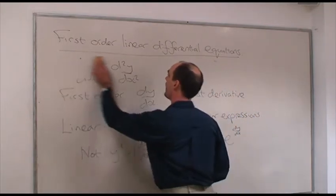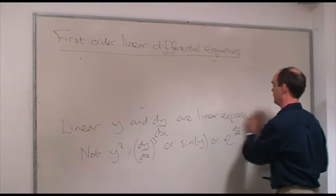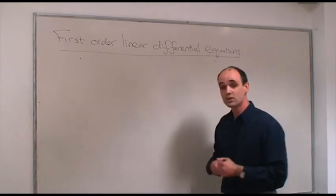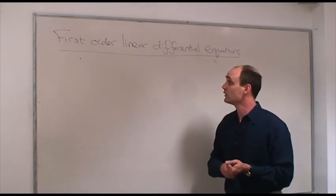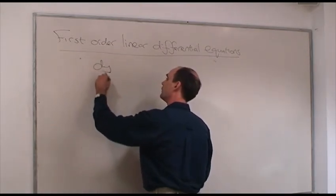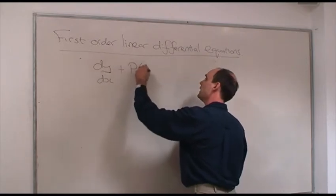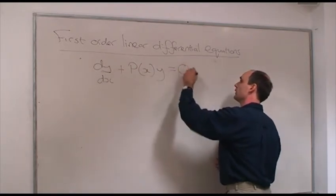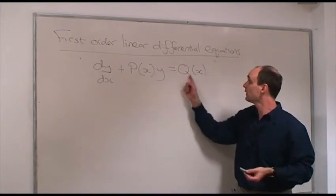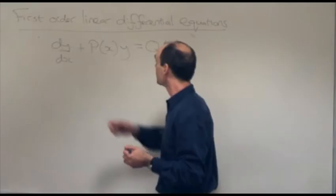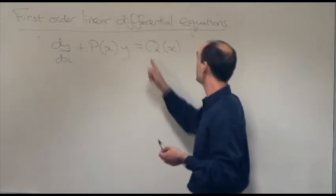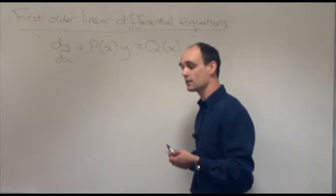Taking all that, the most general expression that you can have which is a first-order linear differential equation is: dy/dx + p(x)·y = q(x), where p(x) is some general function of x and q(x) is a function of x. So this is the most general expression — dy/dx + p(x)·y = q(x) — where p(x) and q(x) are both functions of x.